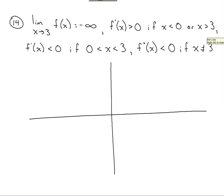Sketching out the curve here, starting with this limit. What that information tells me: if x is approaching 3 and I'm applying it to this function, it gives me some kind of infinite value back. That tells me that I've got a vertical asymptote at 3.